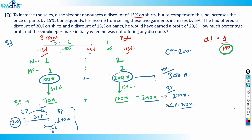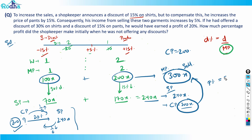So the cost price is 200x. Now, if the shopkeeper did not offer any discount initially, the total mark price is 100x plus 200x, which equals 300x. He would sell at his mark price of 300x with a cost price of 200x. So the profit percent equals profit divided by cost price — that is 100x over 200x — which is 50 percent. So 50 percent is the answer.